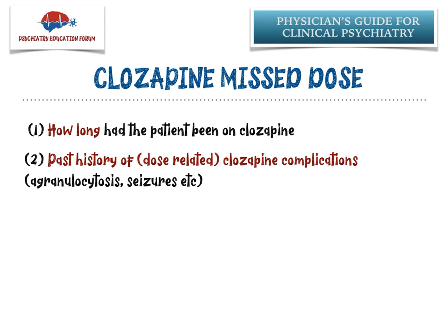Number two is past history of dose-related clozapine complications. Clozapine has various black box warnings and side effects we should be worried about. Some happen irrespective of dose and titration, but some are well known to be dose-related — specifically agranulocytosis and seizure disorder. If a patient has a past history of either of these, I will do very slow titration rather than a faster titration to reach their last known dosage.